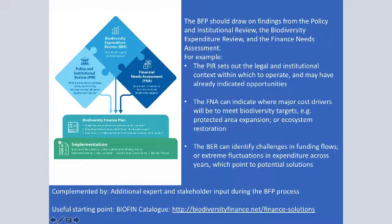Your biodiversity expenditure review should identify challenges in funding flows or extreme fluctuations in expenditure across years, which could point to potential finance solutions. For example, if a country has a very heavy reliance on international donor money that fluctuates greatly and influences how biodiversity is managed, your BER should highlight that. You should then look for finance solutions that help even out funding flows and bring in more mechanisms that allow for national-level finance rather than international finance.